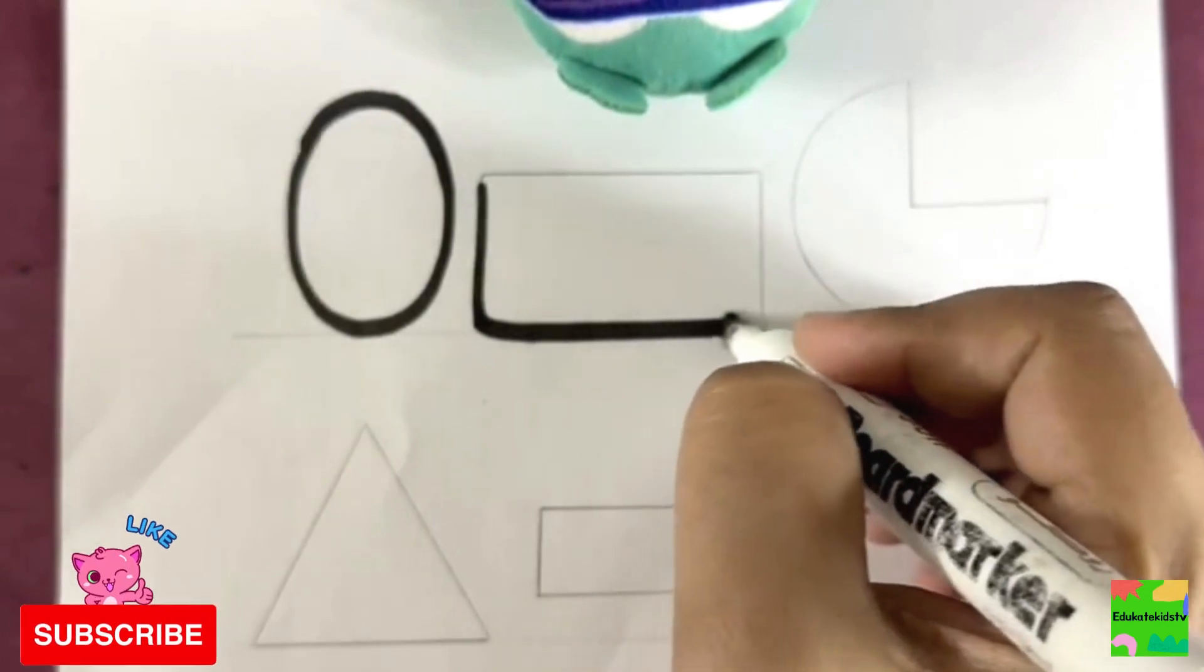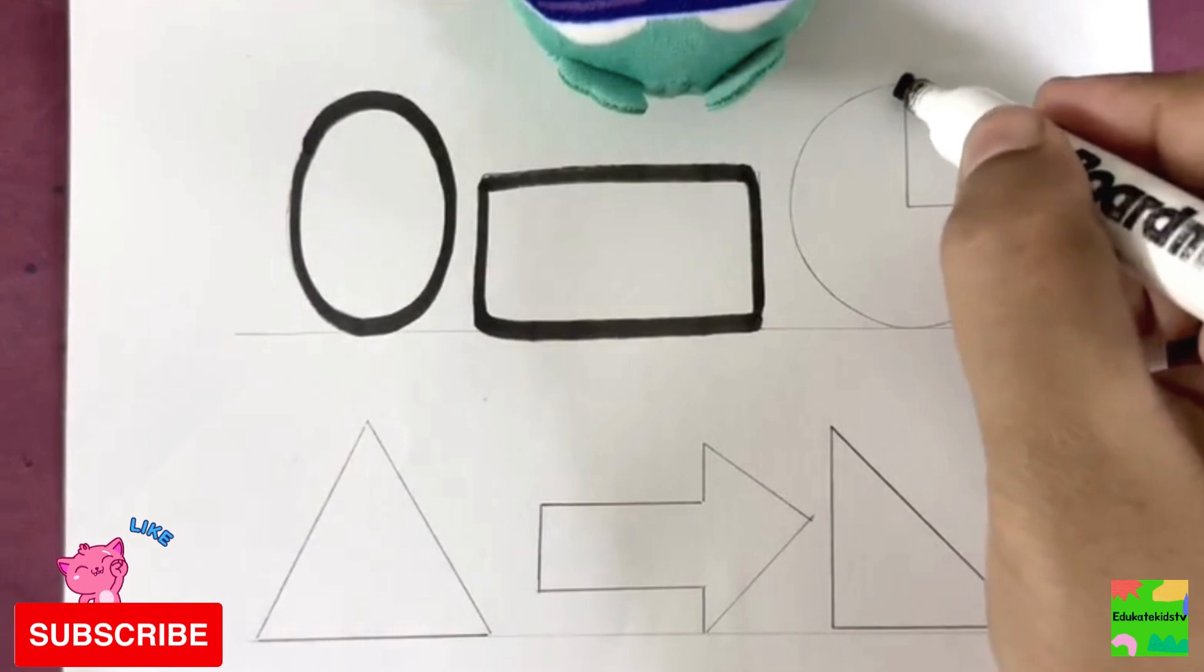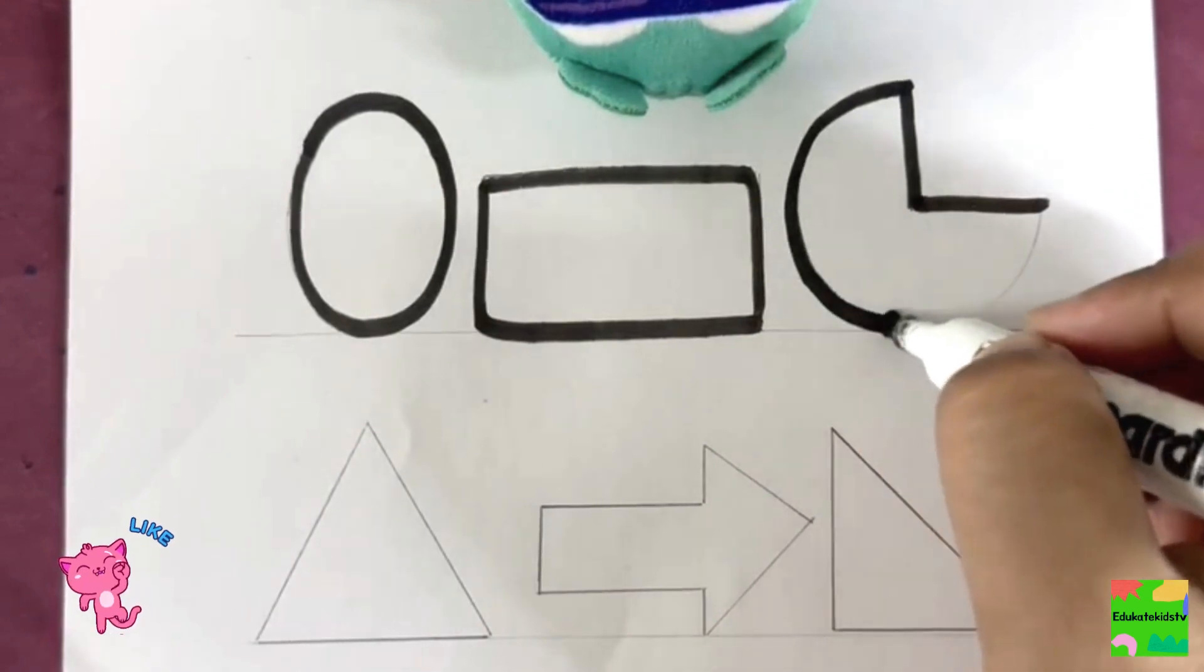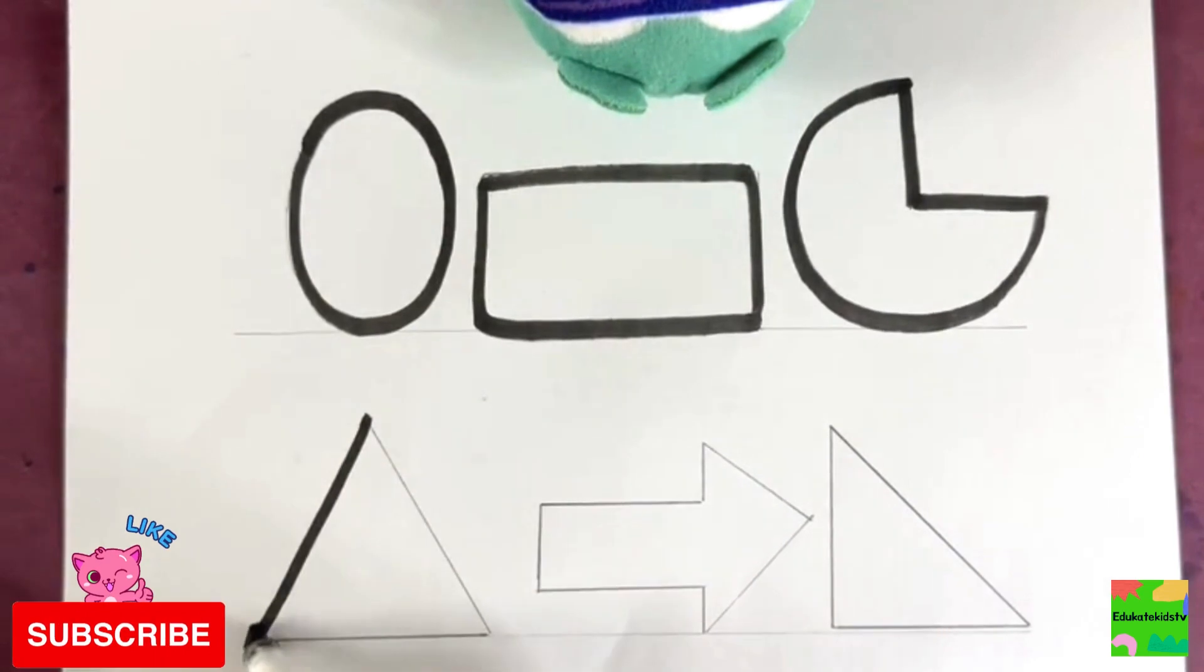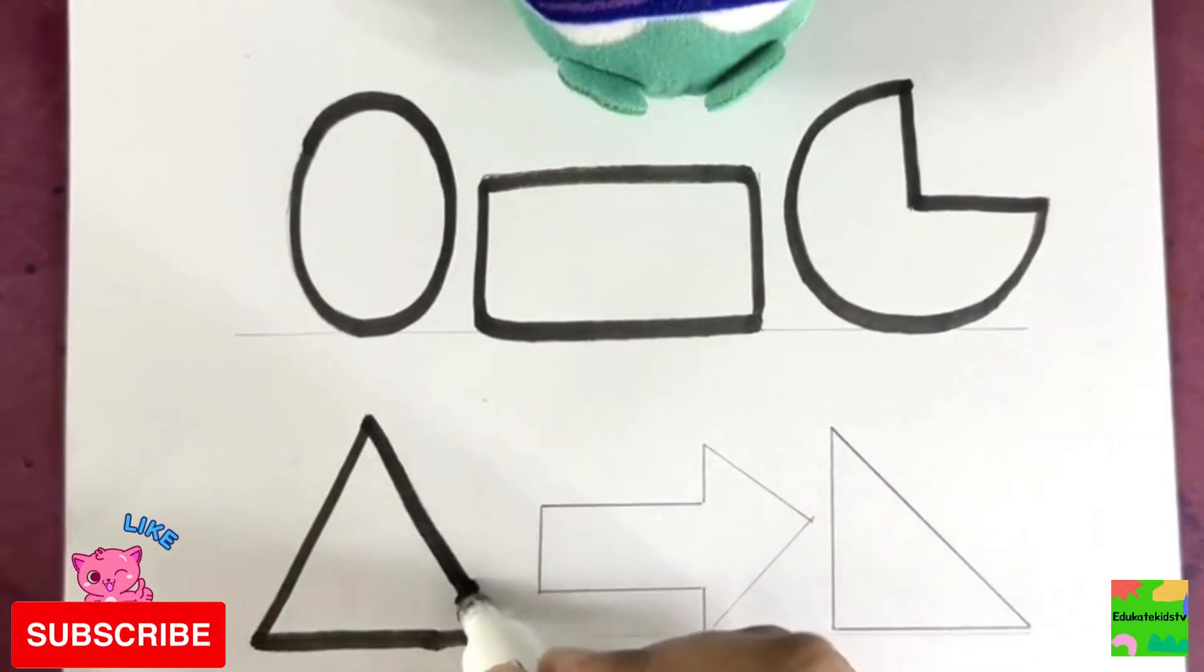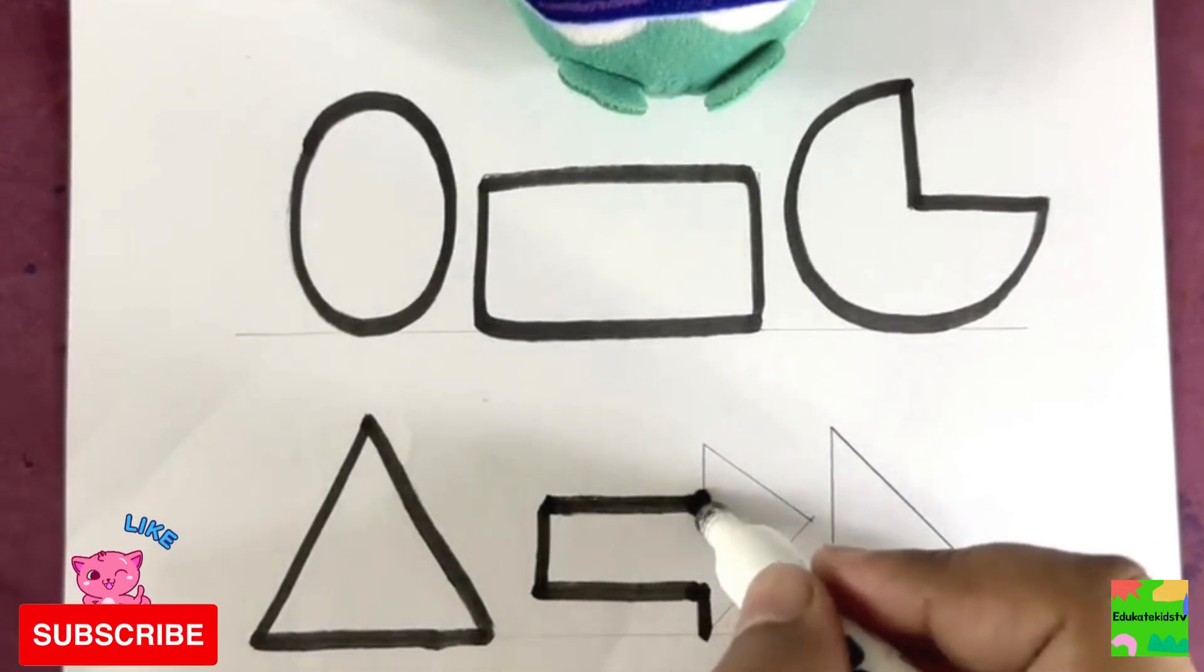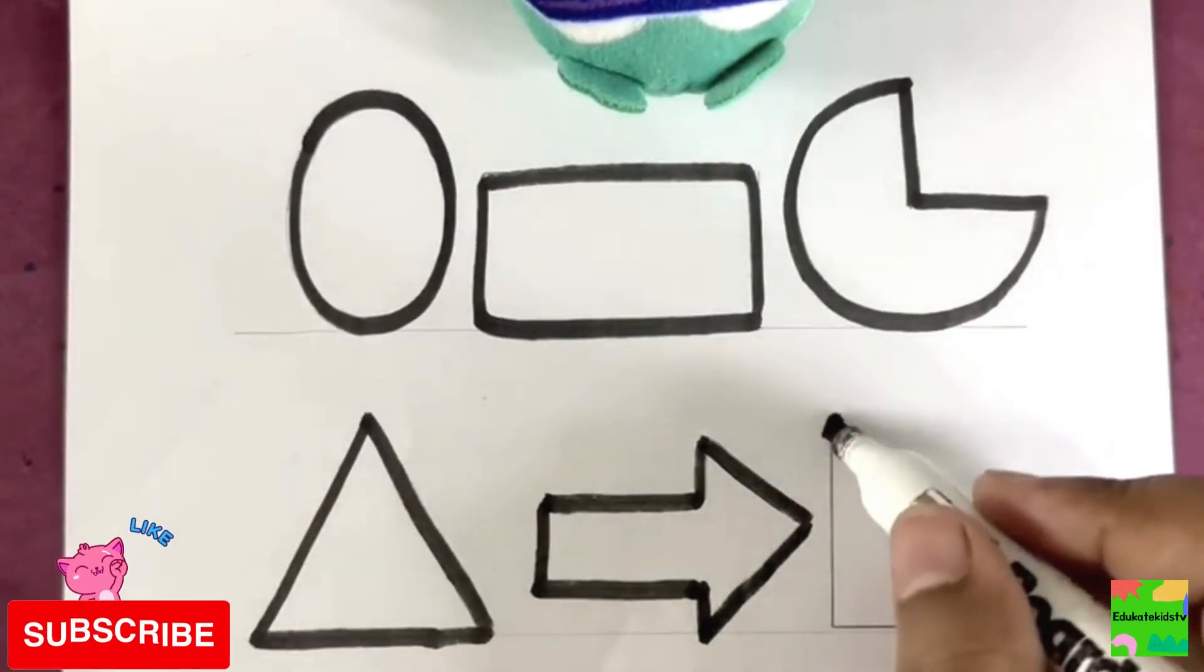Oval, rectangle, pie, triangle, arrow, right angle triangle.